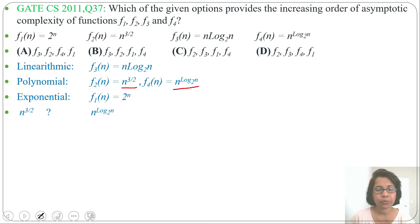So just compare 3 by 2 with log n base 2. Now this is a constant and it is a logarithm. We know that constant order of growth is less than logarithm. So 3 by 2 will be less than log n base 2. That's why n power 3 by 2 will be less than n power log n base 2.